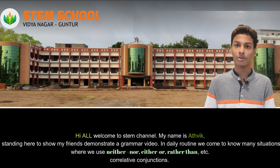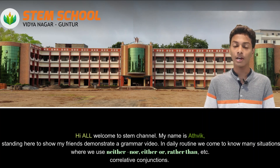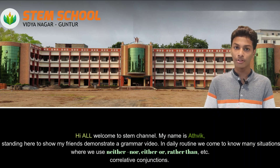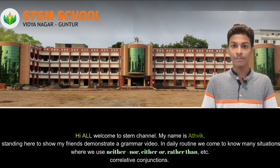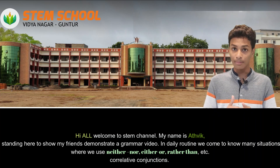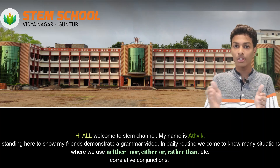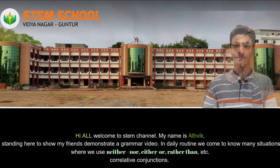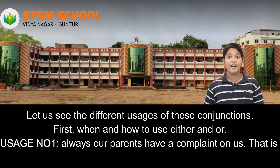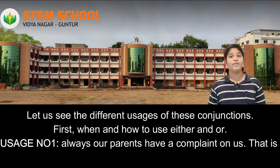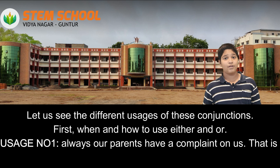In our daily routine, we come across many situations where we use either, neither, rather than, etc. These are correlative conjunctions. Let us see the different usages of these conjunctions.